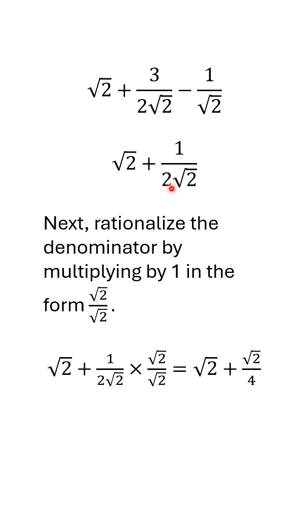Now I have to rationalize the denominator, and the way I do that is I multiply by 1. There are two things you can do in math without changing a number: one is to multiply by 1, which doesn't change anything, and the other is to add 0.